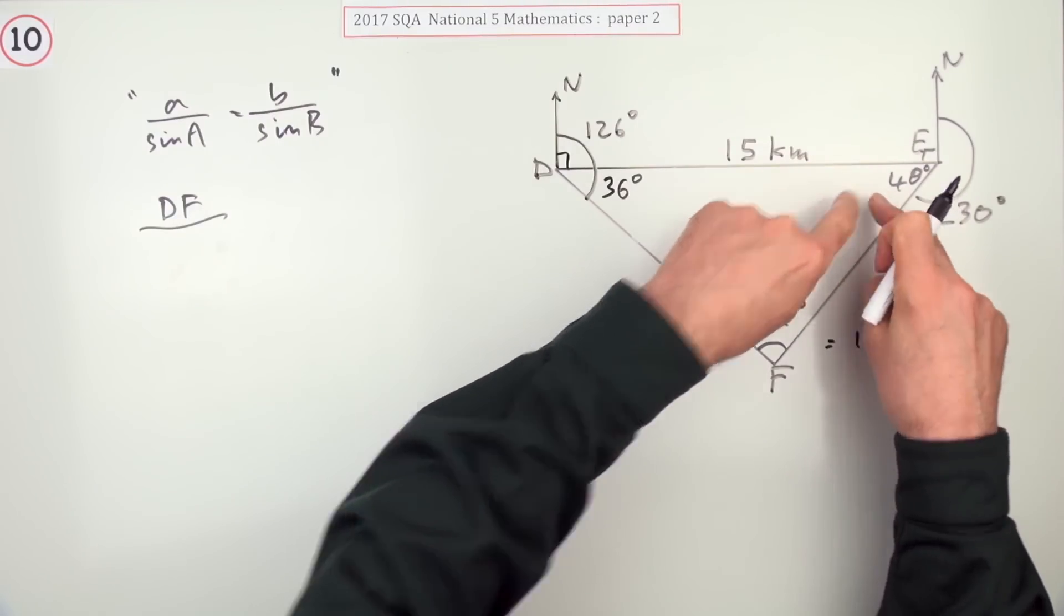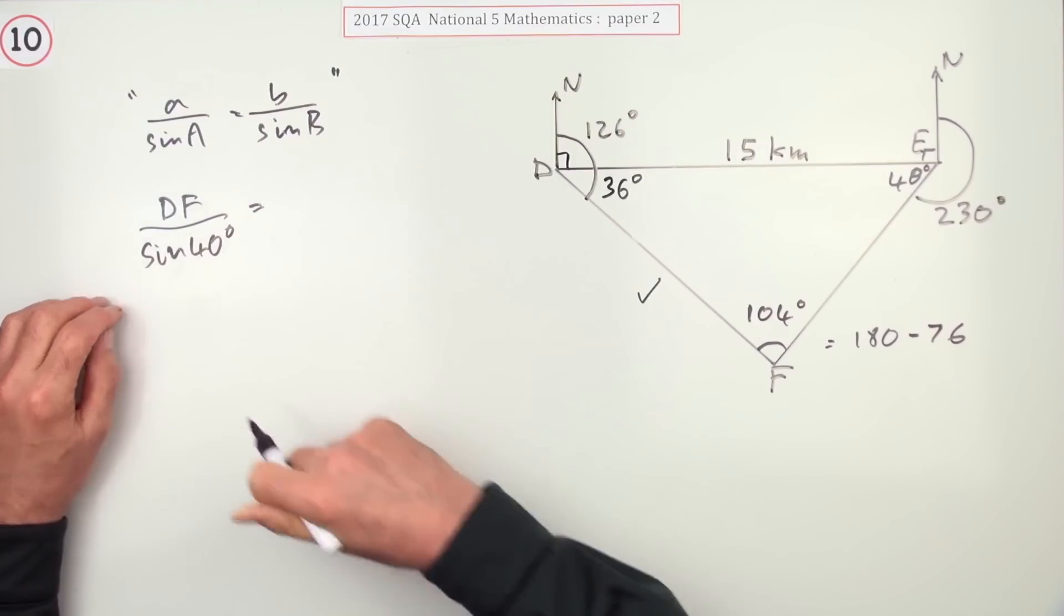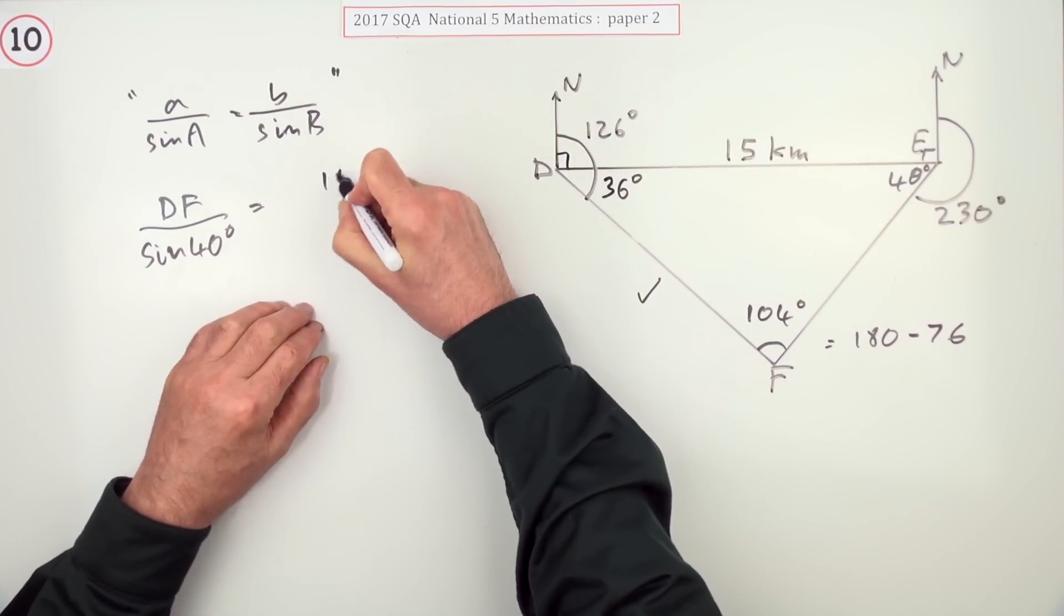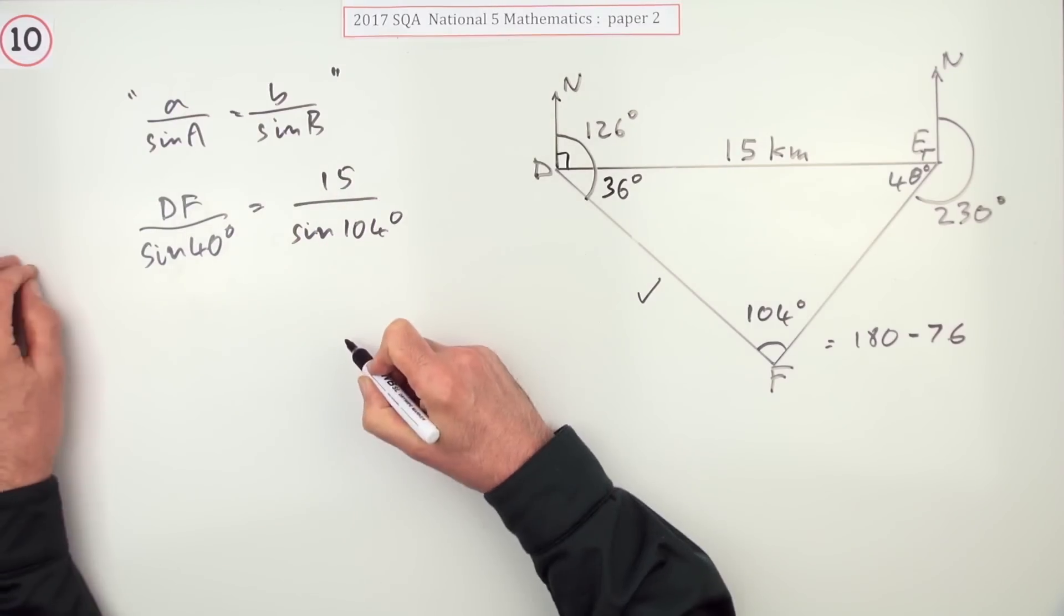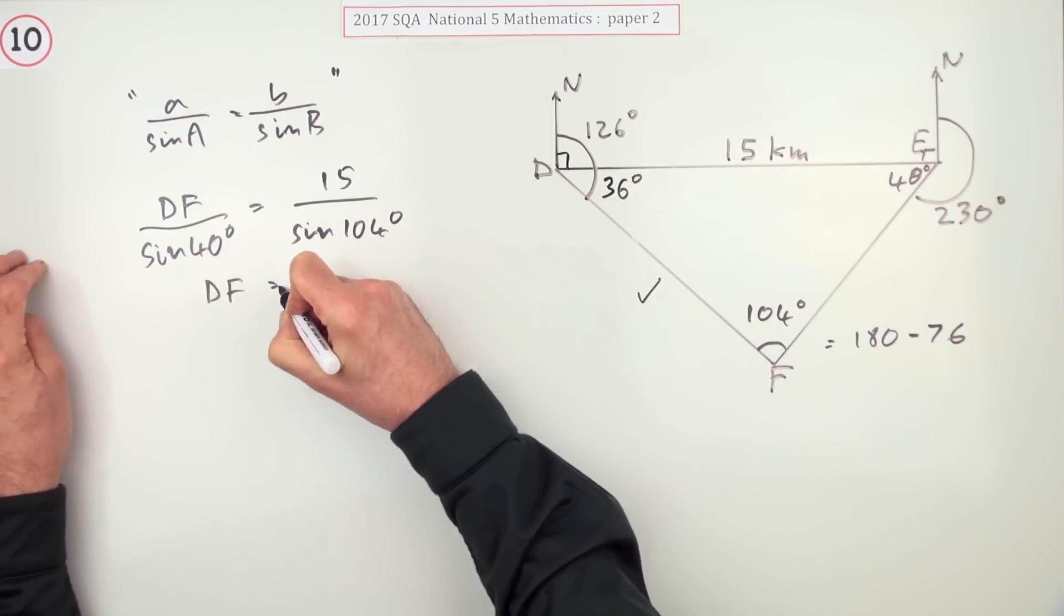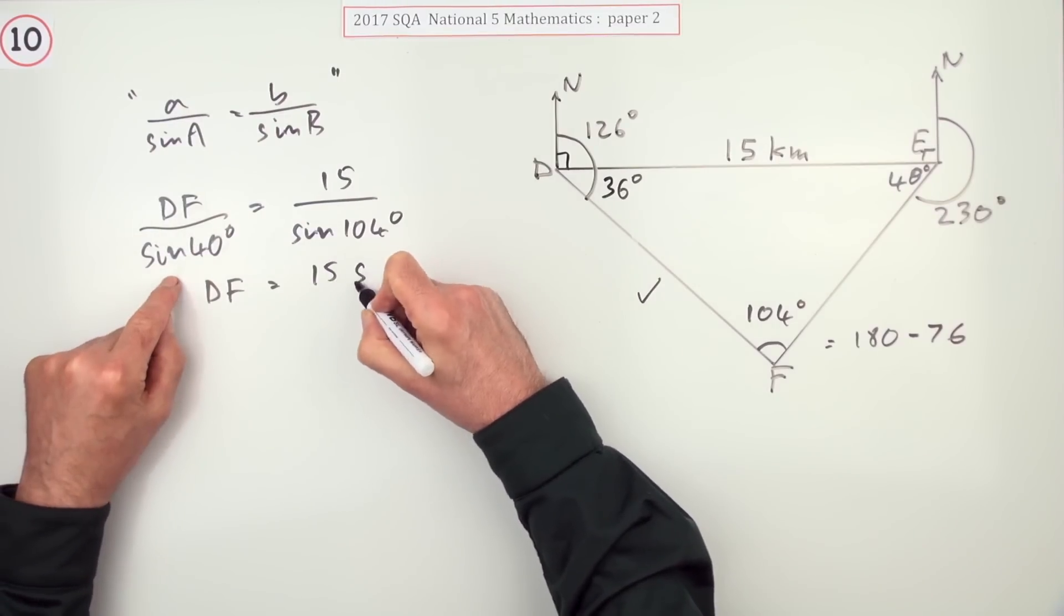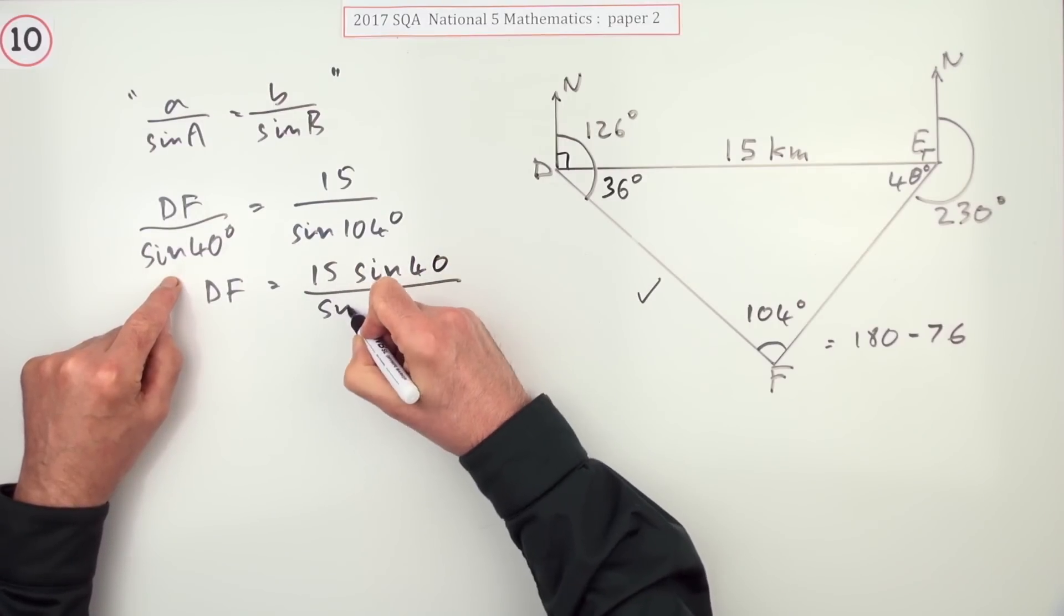I'm just going to leap straight in with the appropriate formula. DF goes with 40. So DF over sine 40, in the same way that 15 goes with this one. In the same way that 15 goes with the sine rule of 104. And then to get DF, rearrange it. So it'll be 15, take that across and multiply. 15 sine 40 over sine 104.